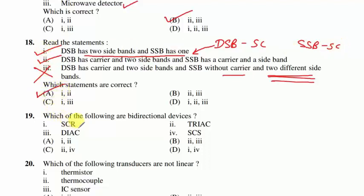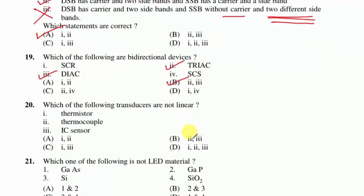Question 19: which are bidirectional switches? TRIAC and DIAC are bidirectional switches. For TRIAC, a gate pulse reduces the forward blocking voltage — option B is correct.